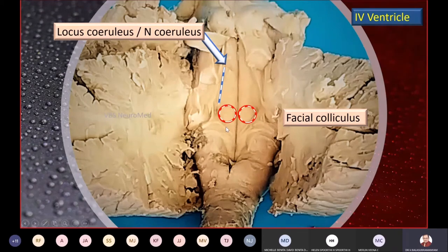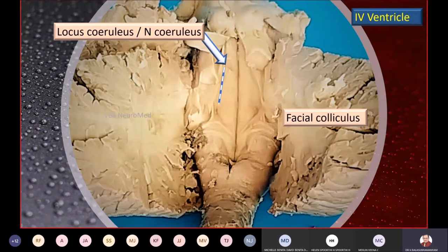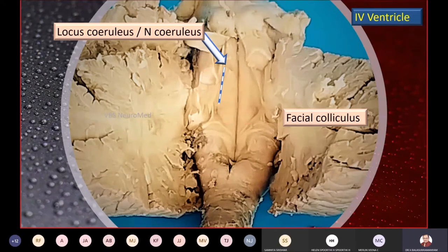Right above the medullary stria, on the inner aspect of the sulcus limitans, as you trace the median eminence downward, there are two swellings called the facial colliculus. This is important because of neurobiotaxis — the abducent nerve and facial nerve are closely interrelated here. The fibers take a complete U-turn around the nucleus and then go down to emerge on the ventral aspect.